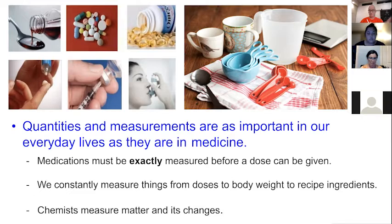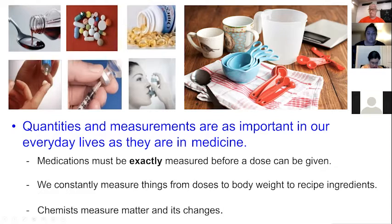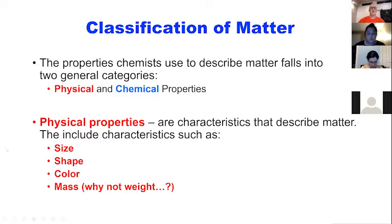We're constantly measuring things — something as important as injecting drugs into a patient, just like baking, we need to keep track of these sorts of things. So when chemists describe matter, we break it into two general categories: physical properties and chemical properties.